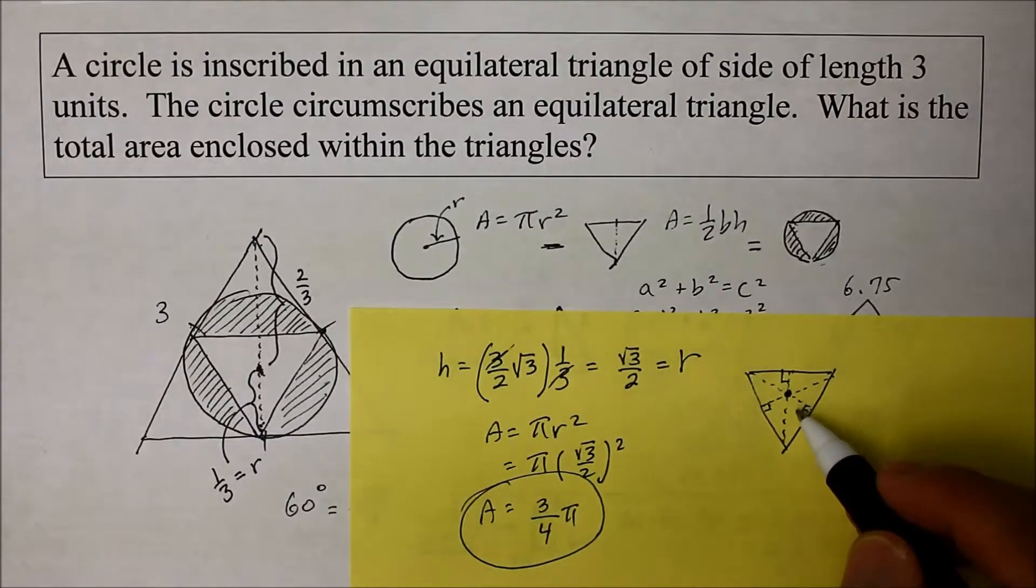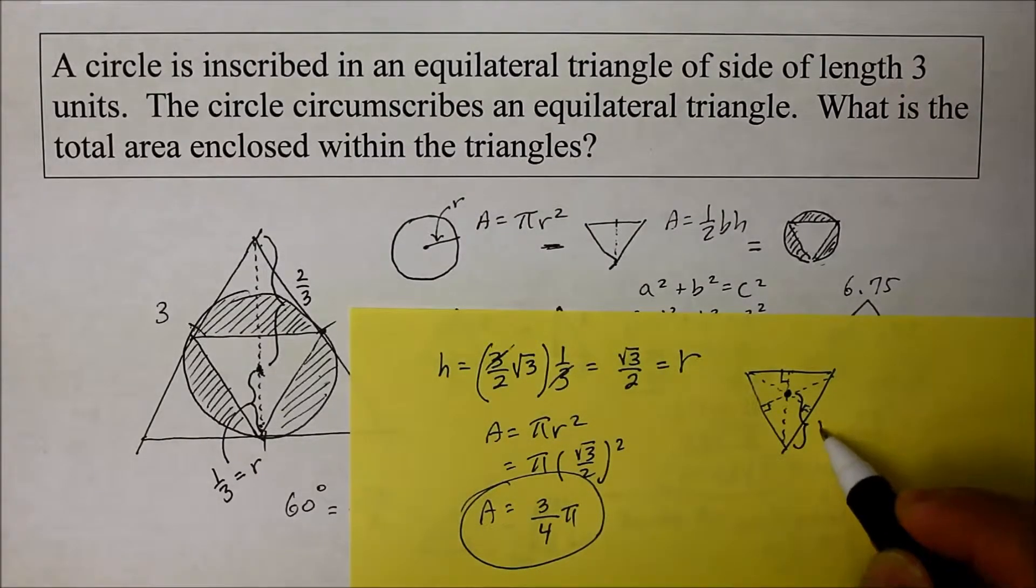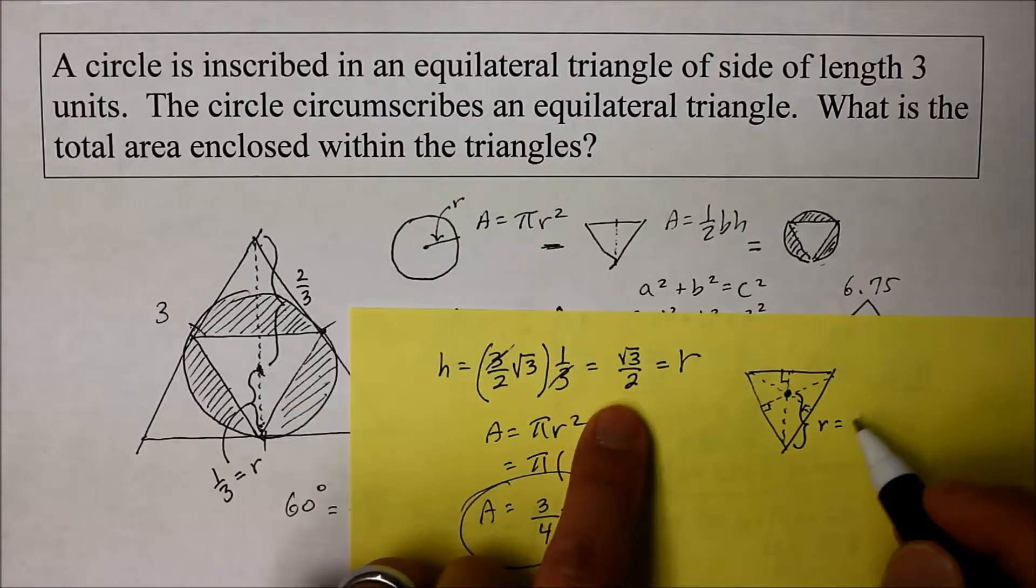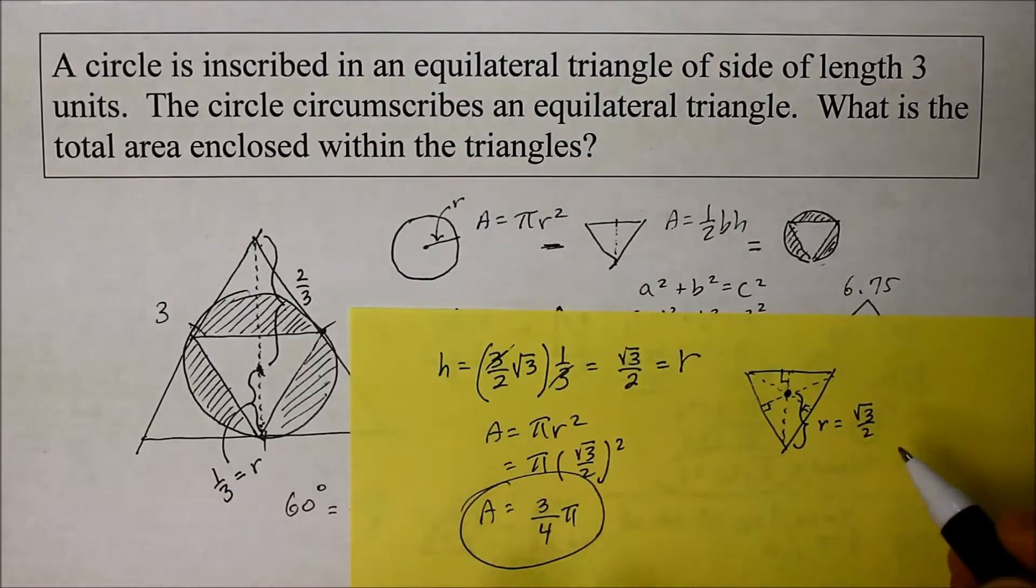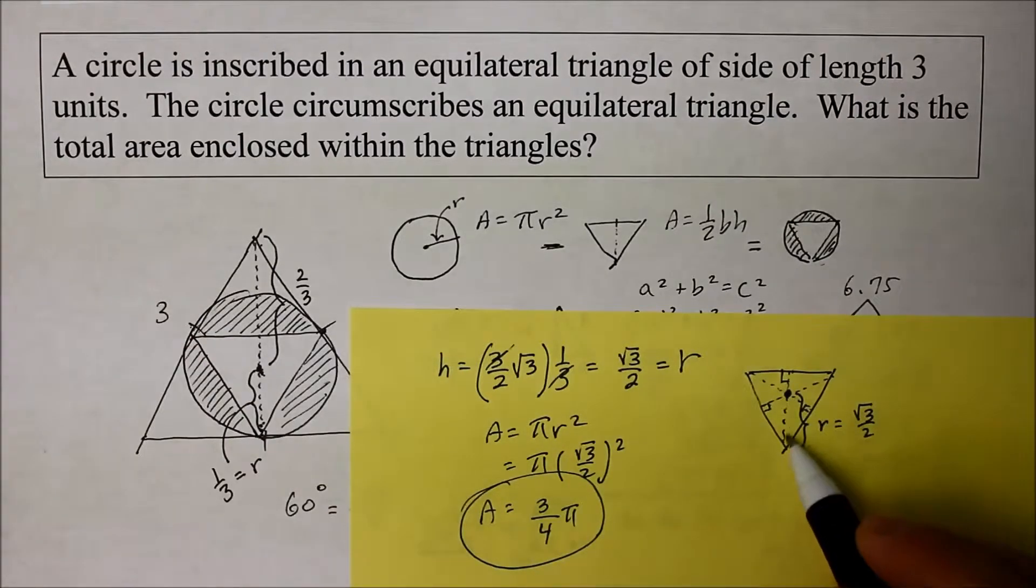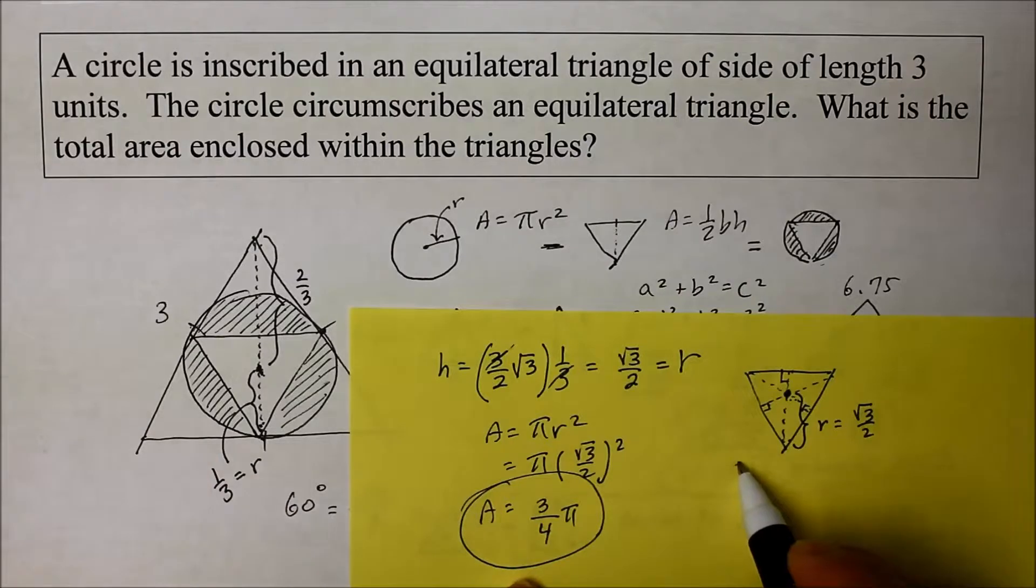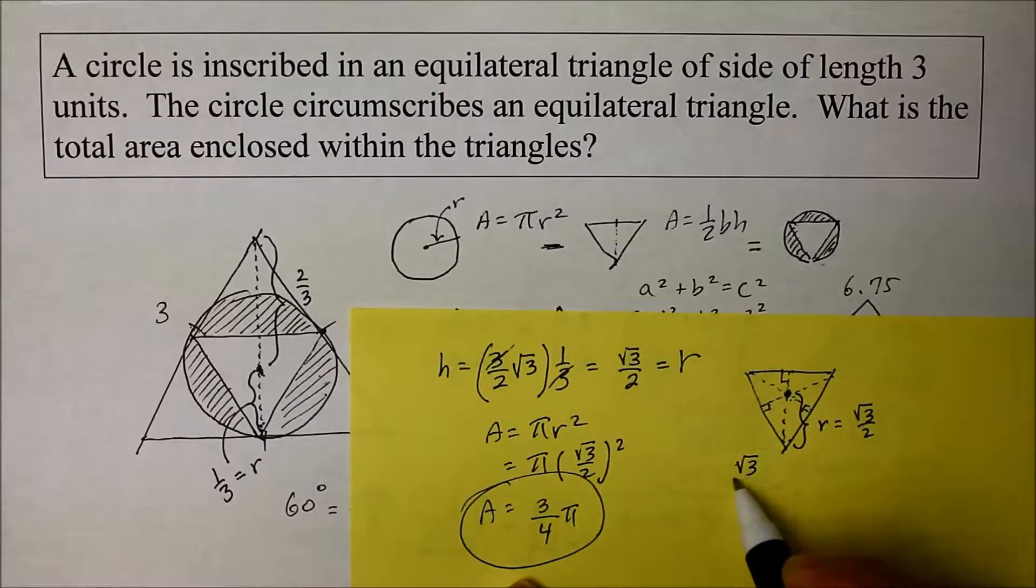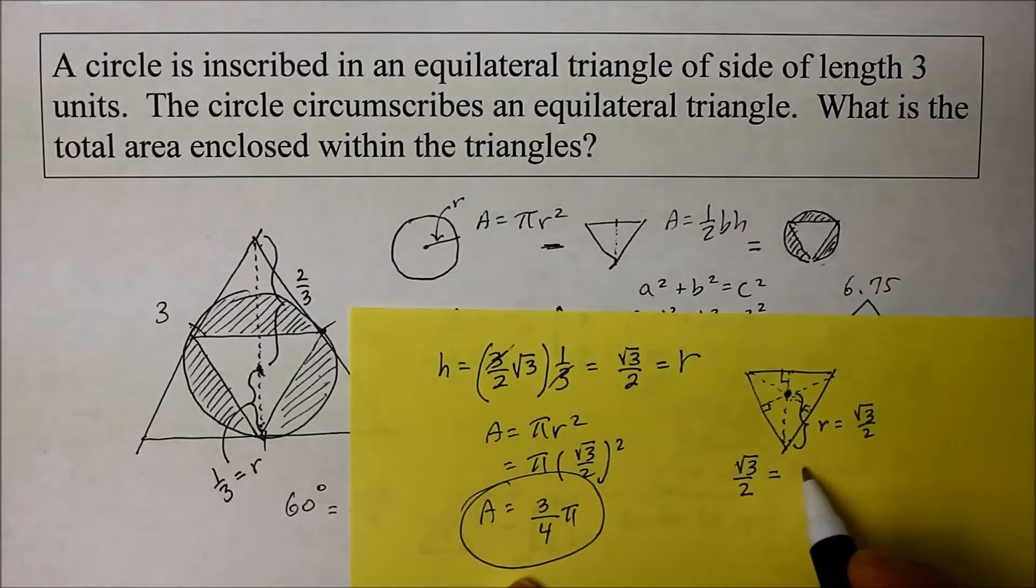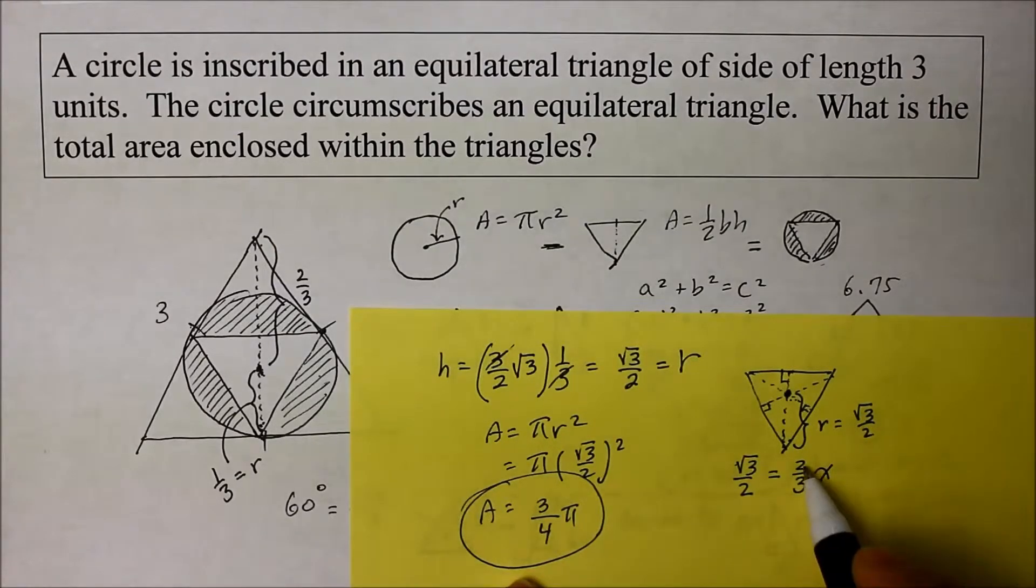So we know that the radius from here to here, which was the radius, it was square root of 3 over 2. That was one-third, right? Now that becomes the two-thirds of the small triangle. Well then, square root of 3 over 2, the radius, is actually two-thirds of the entire distance of that median, isn't it? So I'm going to let that equal to two-thirds x.